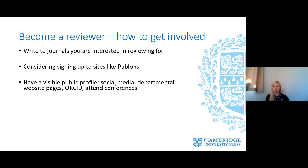The first step in becoming a reviewer is how to get involved. Although lots of people are happy to author, it can be very difficult to find people who have the time or willingness to review. Being a reviewer is a great way to get yourself known in the community and build your profile. It also helps you build on and improve your own work, developing your paper writing skills. To get involved: write to journals you are interested in reviewing for; join sites like Publons where you can track, verify and showcase your peer review and editorial contributions for academic journals; and have a visible public profile through social media, departmental website pages, having an ORCID ID and attending conferences.